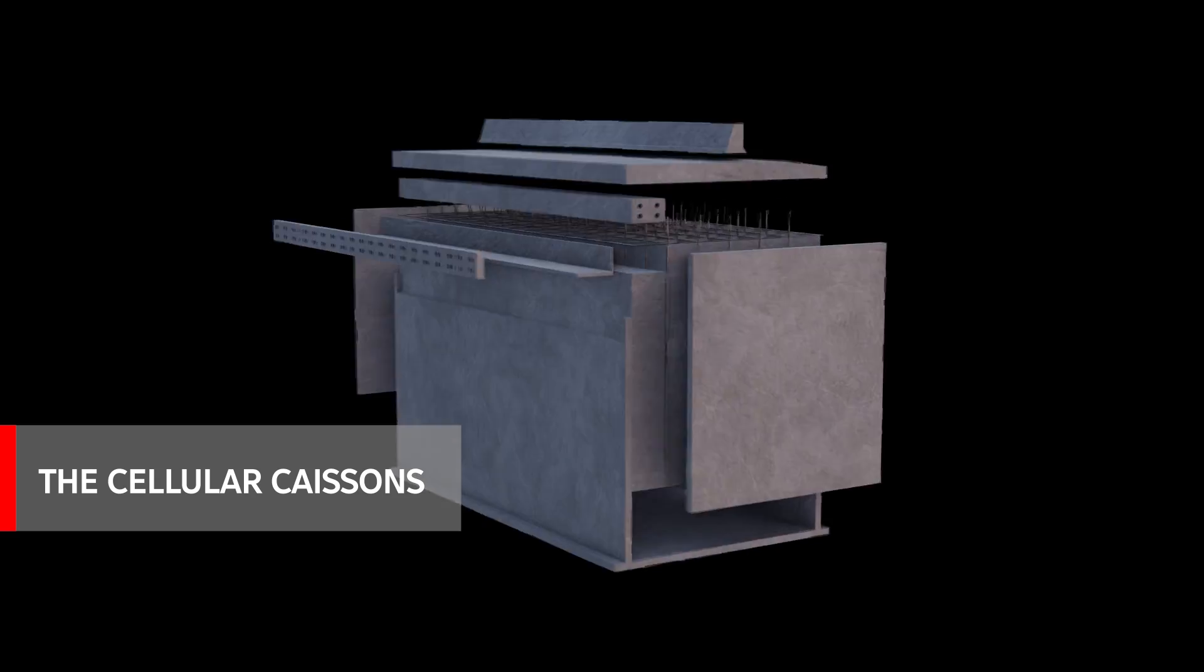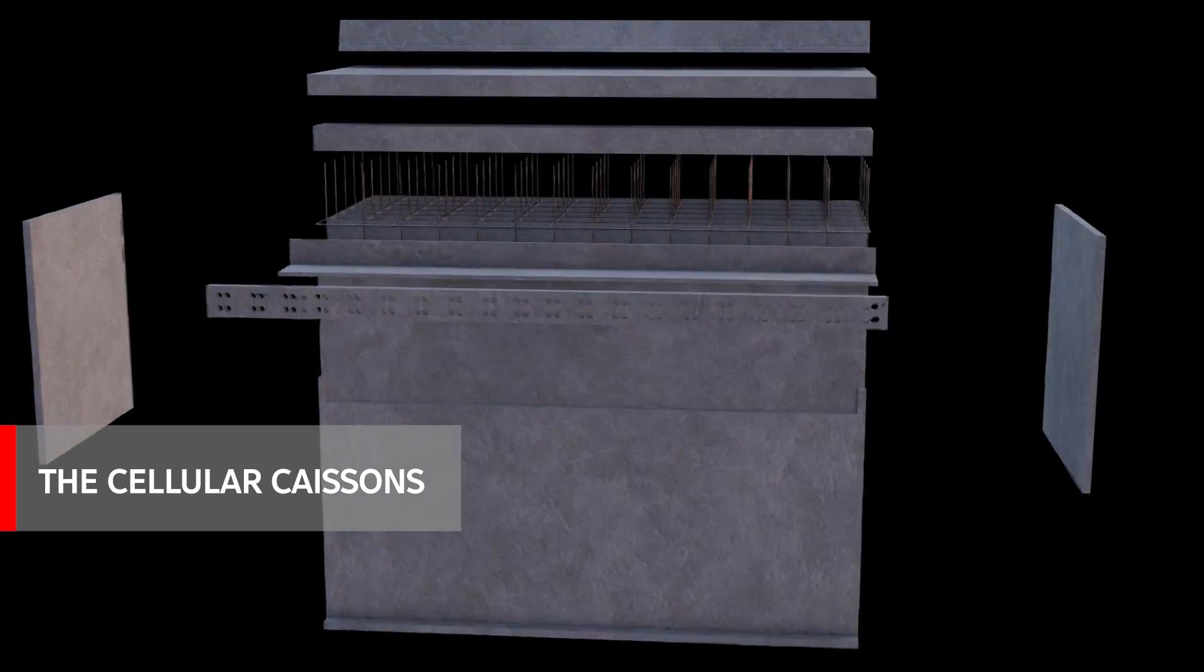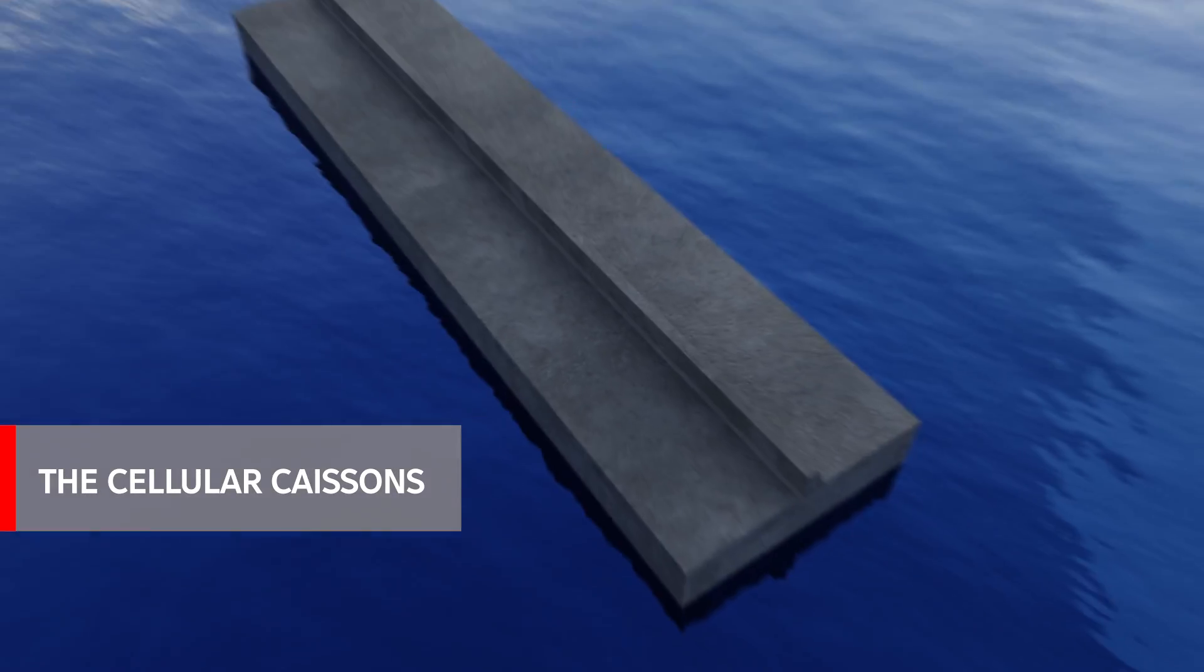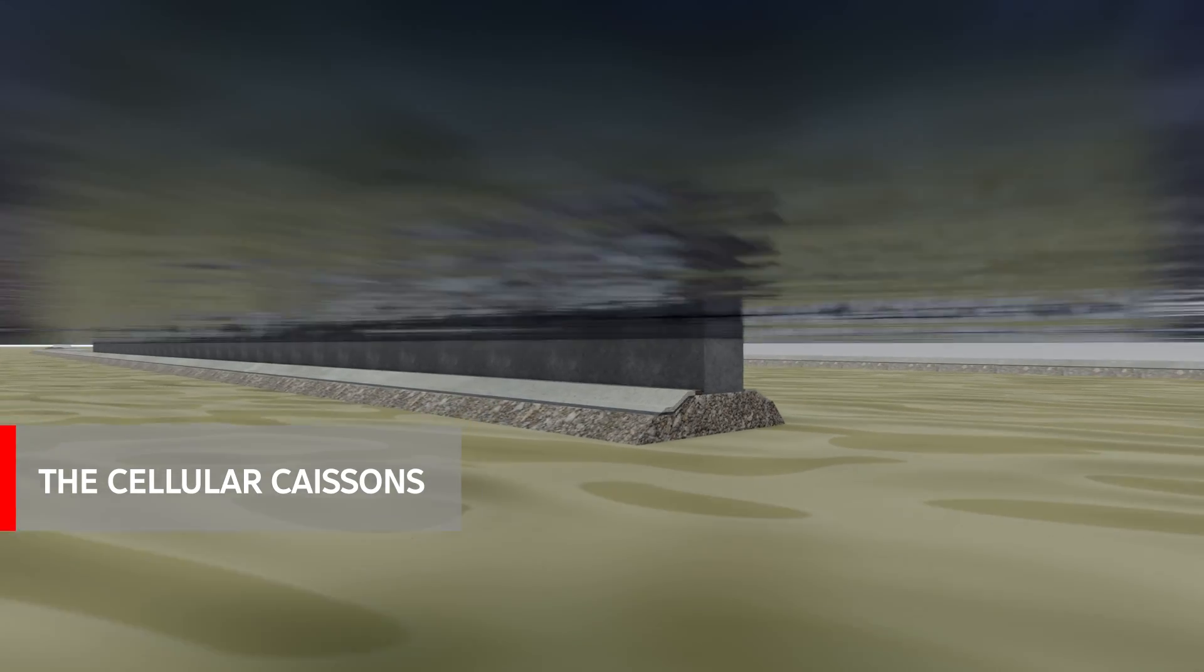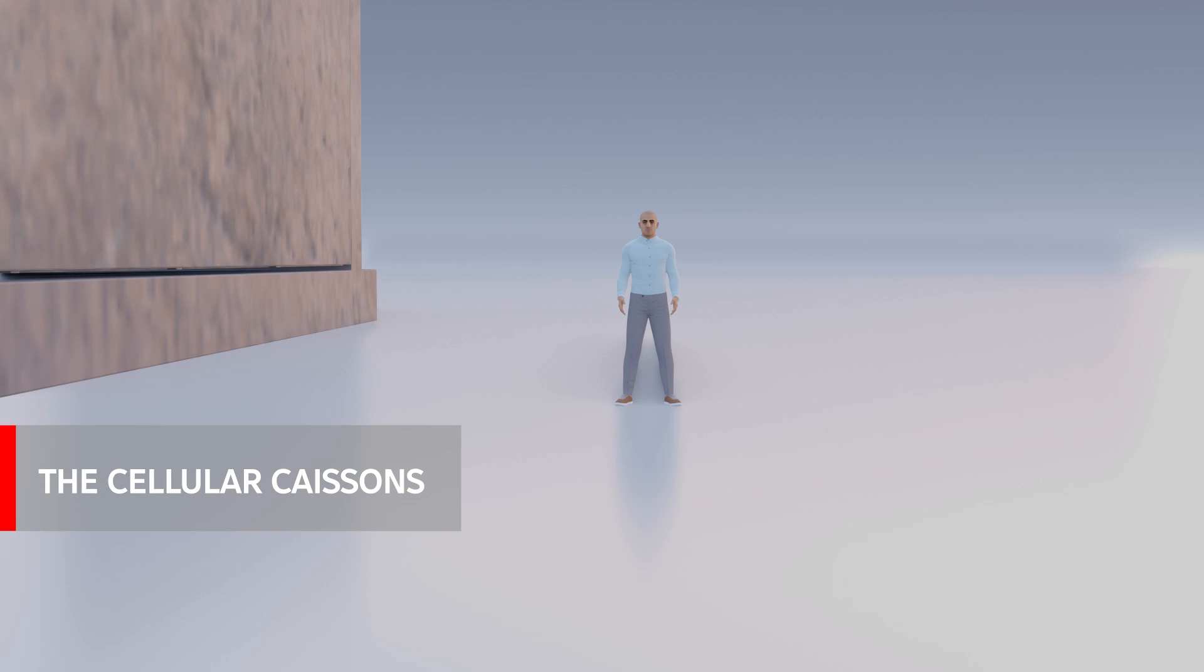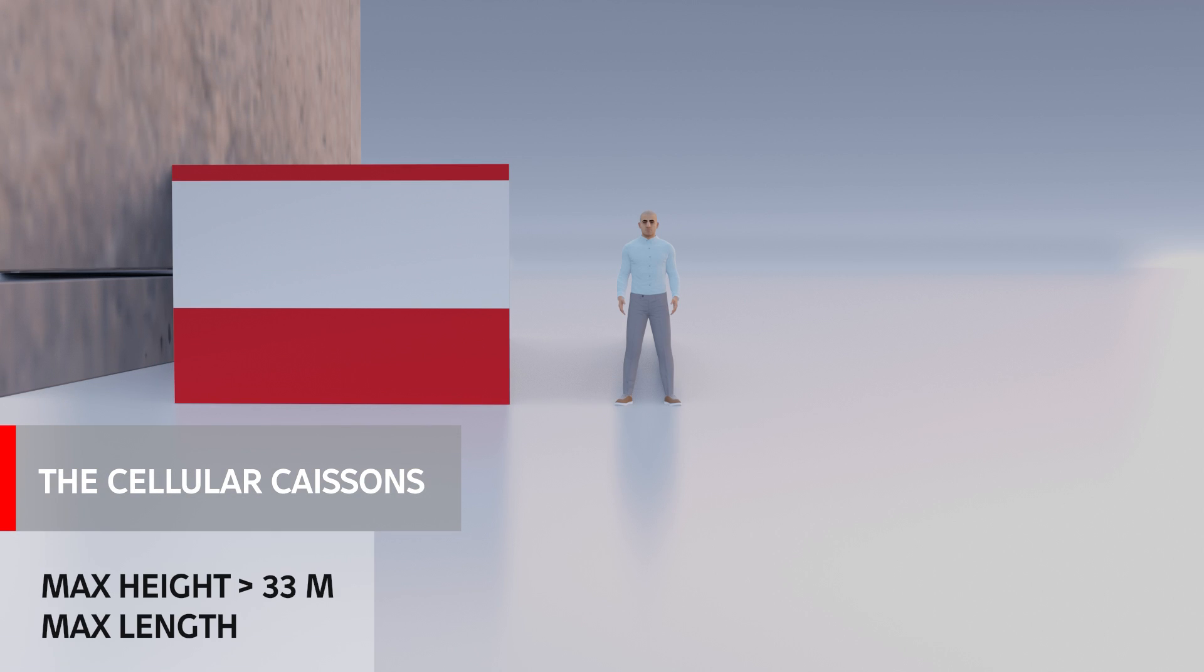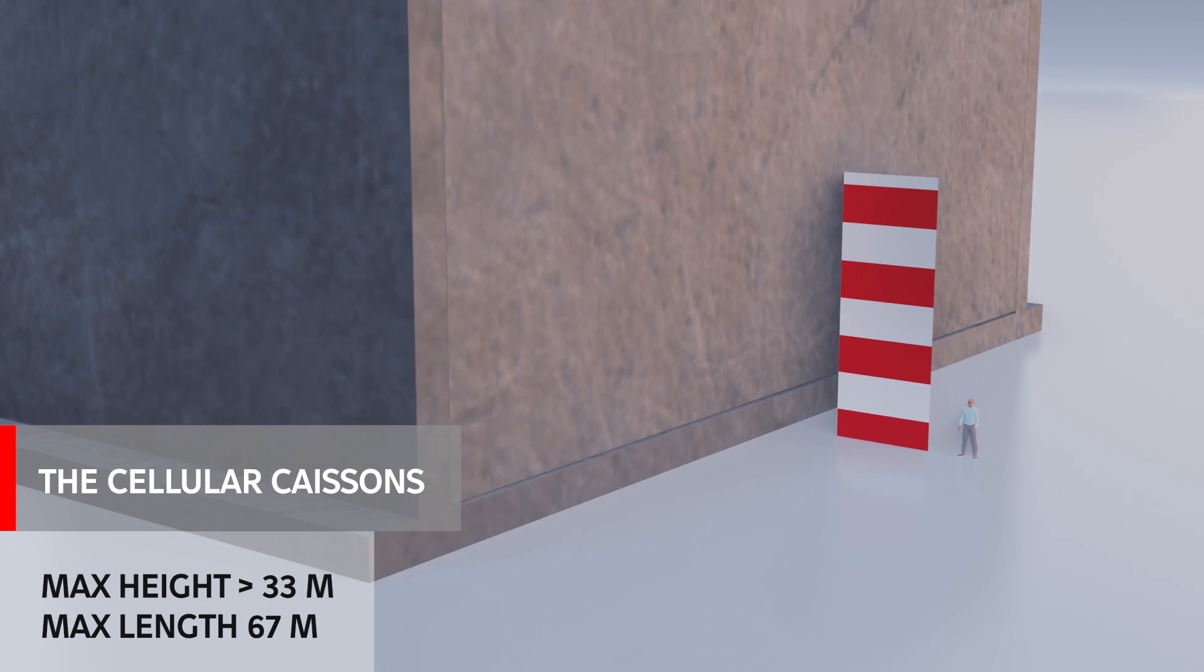The cellular caissons placed on top of the rubble mound base are prefabricated structures to reset the waves action. They represent a semi-submerged wall that exceeds 6 kilometers. The larger ones are taller than 33 meters and approximately 67 meters long.